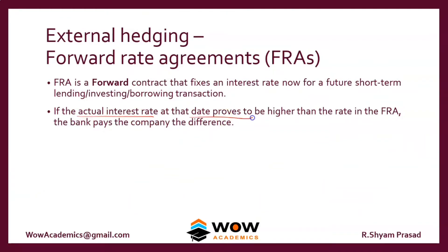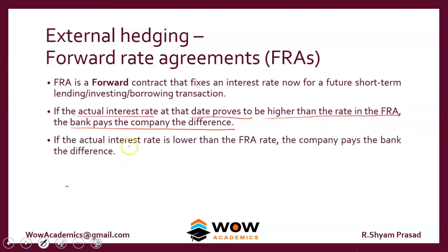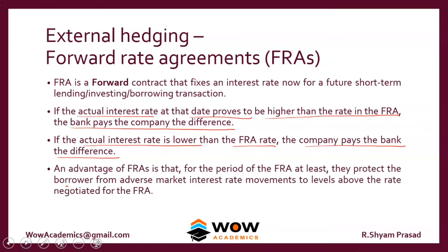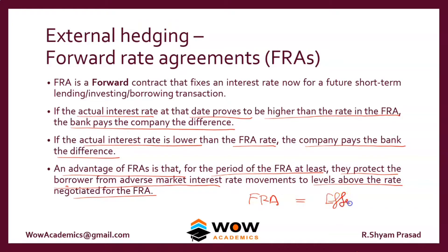If the actual interest rate at the date proves to be higher than the rate in the FRA, the bank pays the difference. If the actual interest rate is lower than the FRA rate, the company pays the bank the difference. An advantage of an FRA is that for the period of the FRA, it protects the borrower from adverse market interest rate movements to levels above the rate negotiated for the FRA.